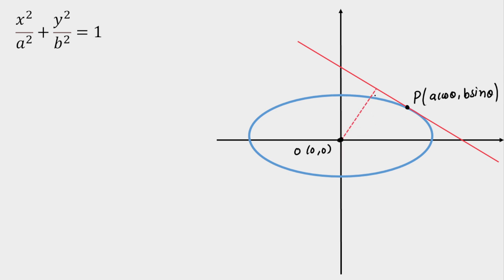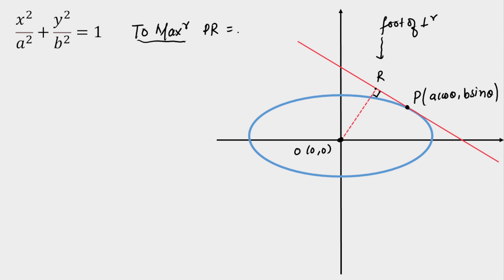Let's say the foot of the perpendicular is R, dropped from the origin to the tangent. Our objective is to maximize the length PR. Now if you follow the regular routine — calculating the R point first — it will be very difficult within the given time because it will be too lengthy.